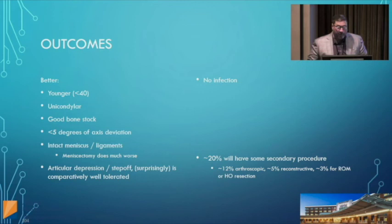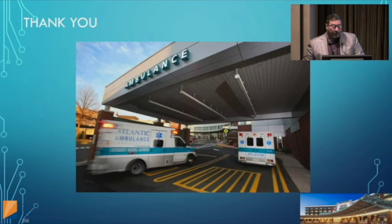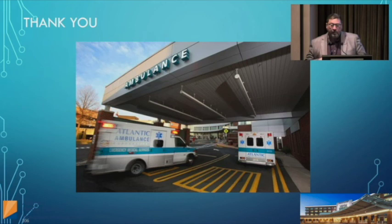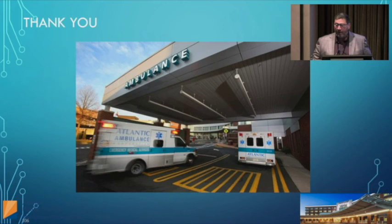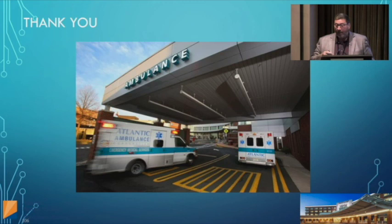Outcomes are better in younger patients under 40, unicondylar fractures, good bone stock, less than 5 degrees of axis deviation, and absence of meniscal or ligament tears and infection. Damage control orthopedics — the trend now when a patient has multiple injuries is to fix the most critical things and do provisional treatment like external fixation, then bring patients back in stages to fix each injury as they improve, which is physiologically better for patients.